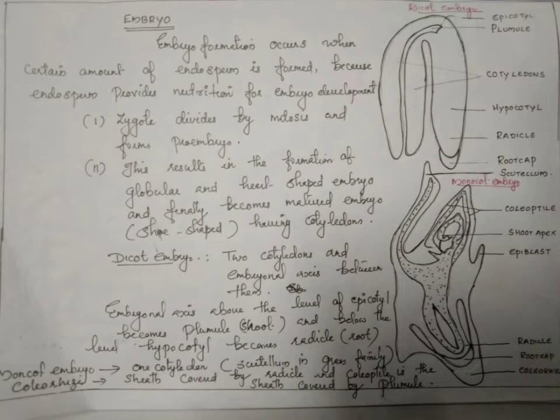The pro-embryo finally becomes a shoe-shaped mature embryo having cotyledons, which are the seed leaves. Depending on the number of seed leaves, seeds are divided into two types: monocot seeds and dicot seeds. When seeds have only one cotyledon, the seed is called monocot. When seeds have two cotyledons, that type of seed is called dicot.